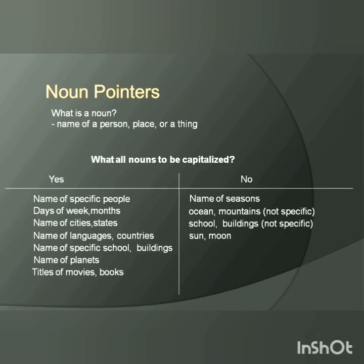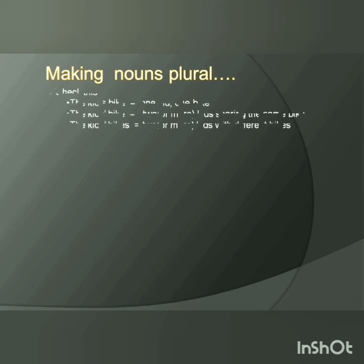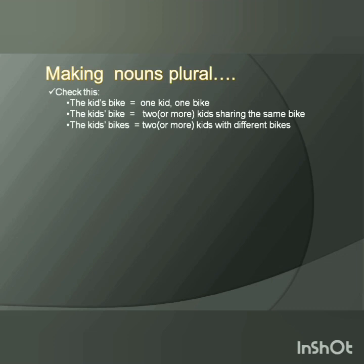Next is making noun plural. Plural means many things — like one ball, many balls. First, 'the kid's bike' means one kid, one bike. Second, 'the kids' bike' means two or more kids sharing the same bike. Third, 'the kids' bikes' means two or more kids with different bikes. There are a few rules to make noun plural.